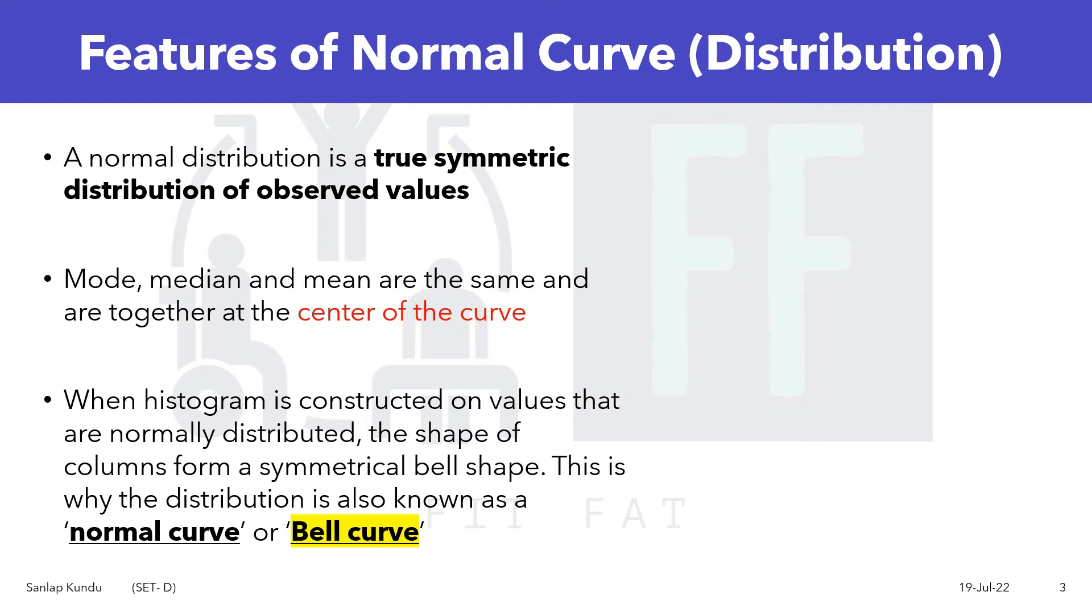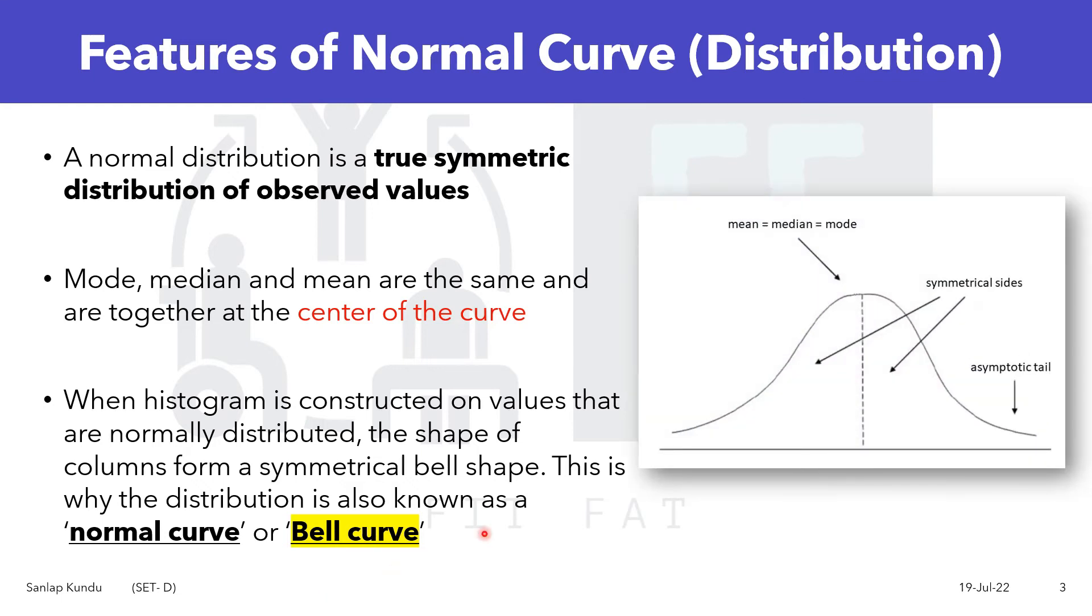When a histogram is constructed on values that are normally distributed, the shape of the columns form a symmetrical bell shape. This is why the distribution is also known as a normal curve or bell curve.